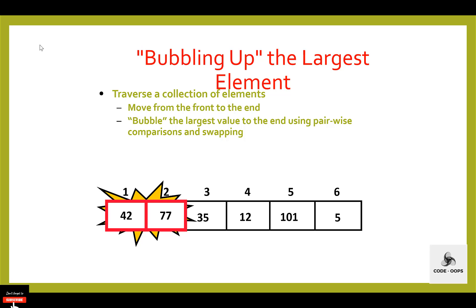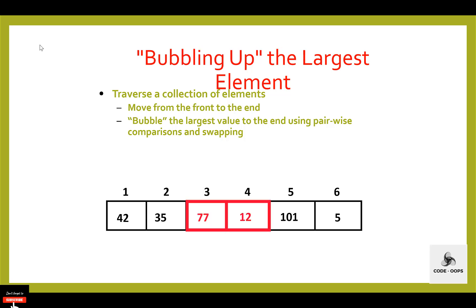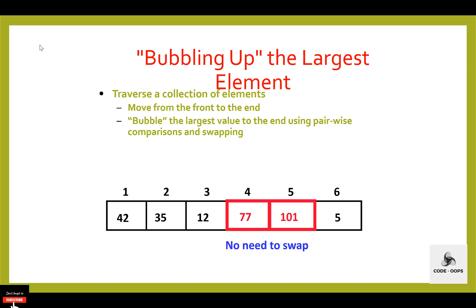Then compare 77 with 12. If the current element is less than the next element of the array, then move to the next element and repeat. Now compare 77 with 35. 77 is greater than 35, then swap them. Then compare 77 with 12. 77 is greater than 12, swap them. Then compare 77 with 101. 77 is not greater than 101, so condition is evaluated to be false. The current element is less than the next element, so move to the next element. Then compare 101 with 5. 101 is greater than 5, condition is true, then swap them.